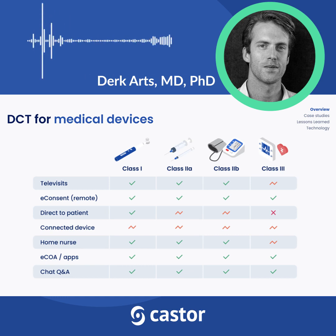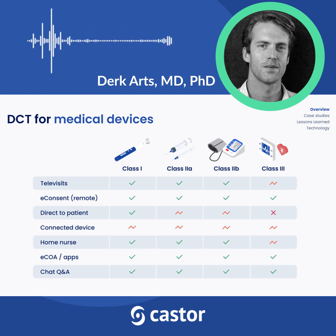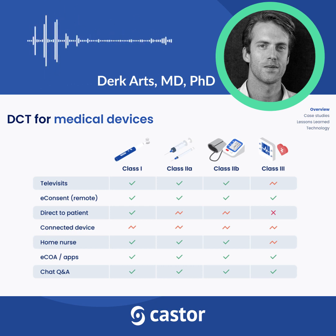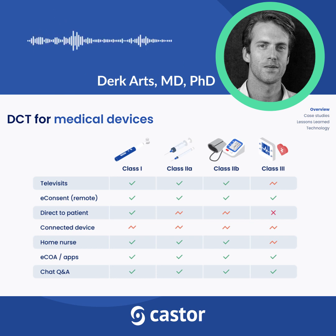Let me just talk you through this briefly, because I think it's interesting to challenge you on your thinking, because I think almost any trial, any product supports making trials more hybrid. Let's start with televisits. For class one to class two B, hypothetically, you should be able to conduct all your visits through televisits. And that's what the green checkmark means — would it be feasible to actually do everything through a televisit?